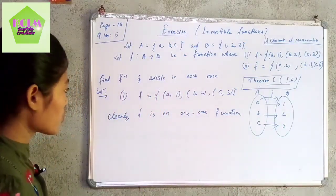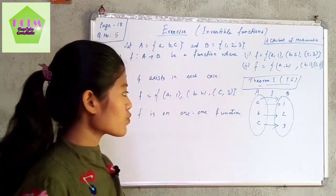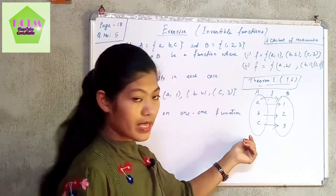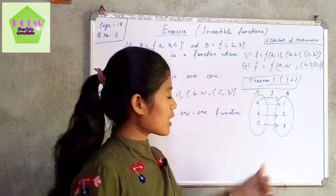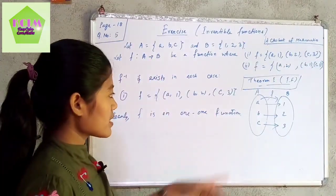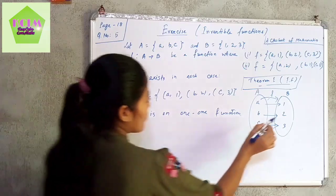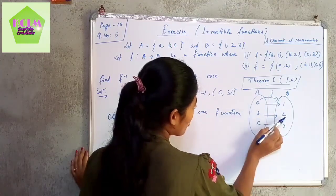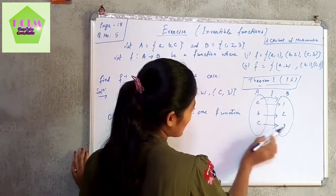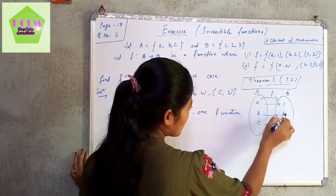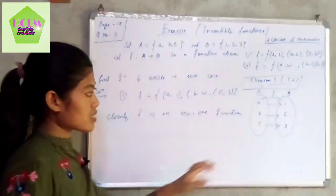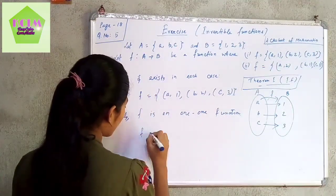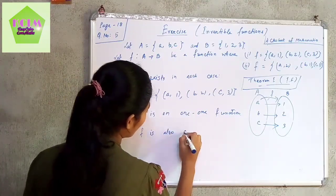Now checking if f is onto: B contains 1, 2, and 3. The element 1 has pre-image a, 2 has pre-image b, and 3 has pre-image c. All three elements in B have pre-images in A and none is left unrelated. Therefore, f is also an onto function.